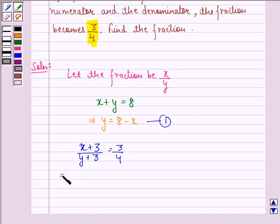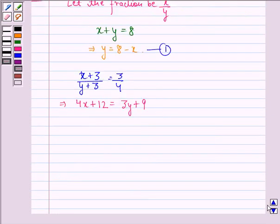Now this implies 4 into x plus 4 into 3, that is 12, is equal to 3y plus 9. This we get by cross multiplication. So this implies that 4x minus 3y.